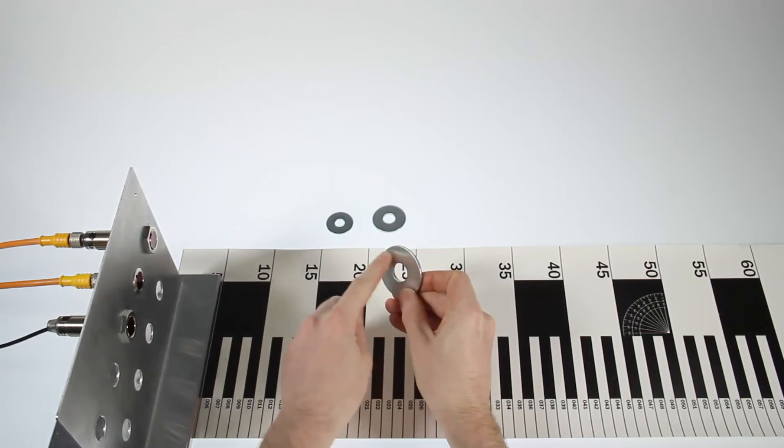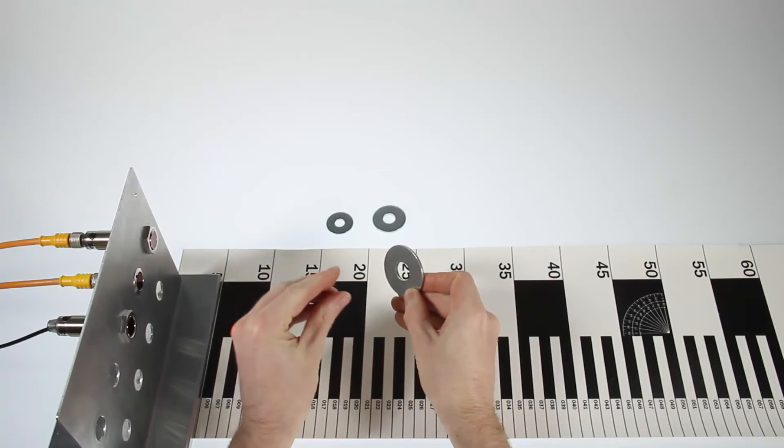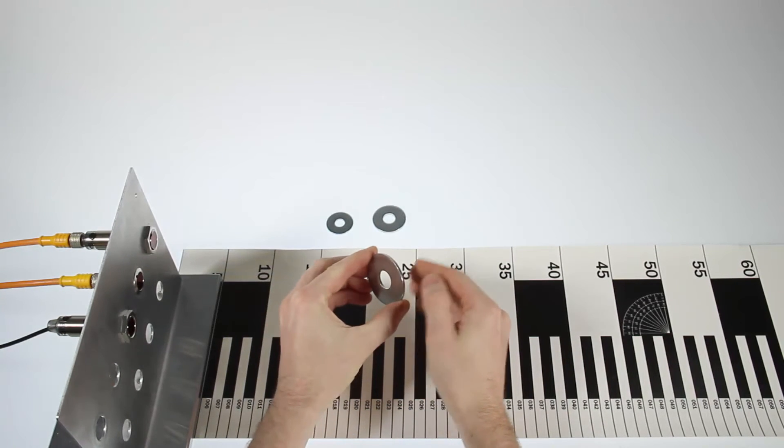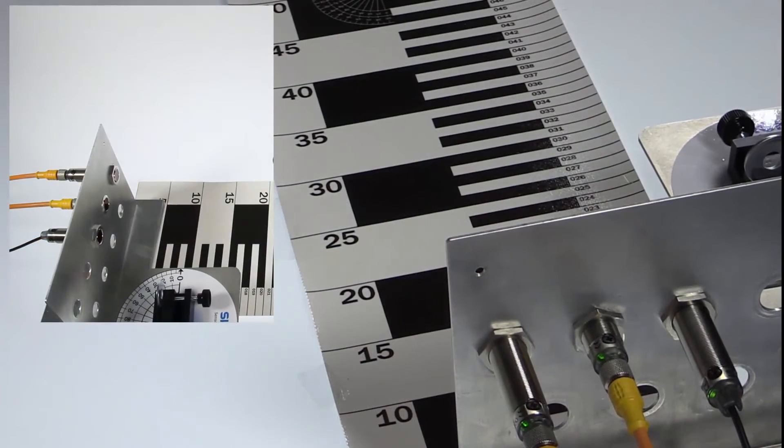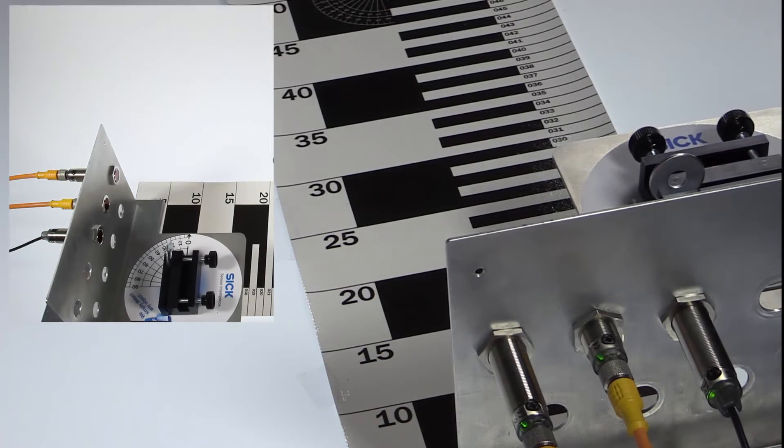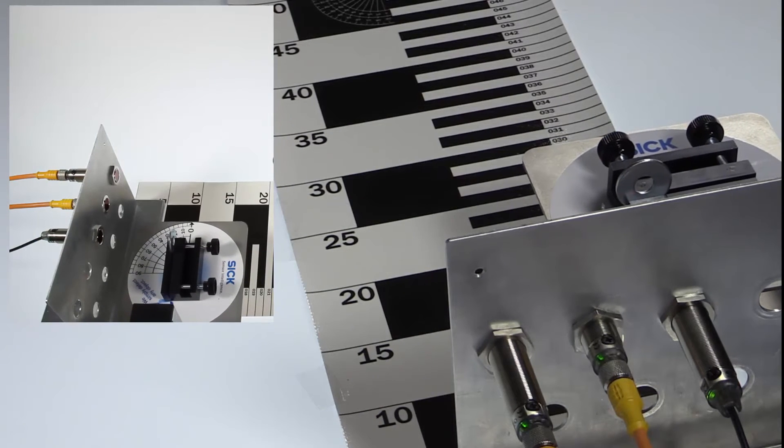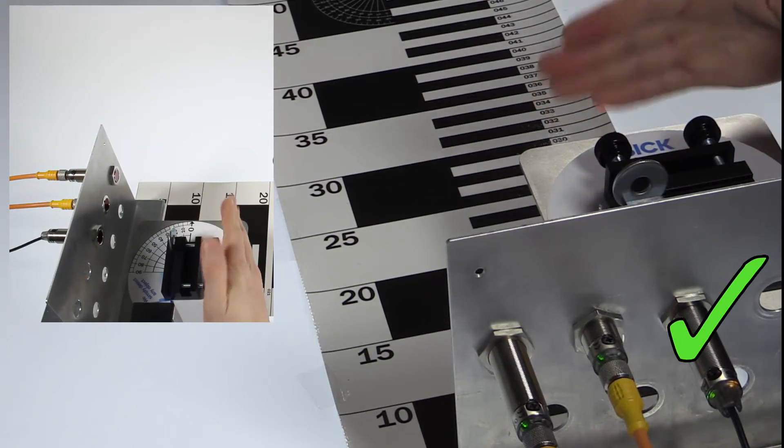An example would be having a cutout on some machine part. The sensor is mounted behind the surface and detects the objects through the cutout. This will work, depending on the hole size, quite good for the background suppression version and the 400mm energetic version using the Pinpoint LED.